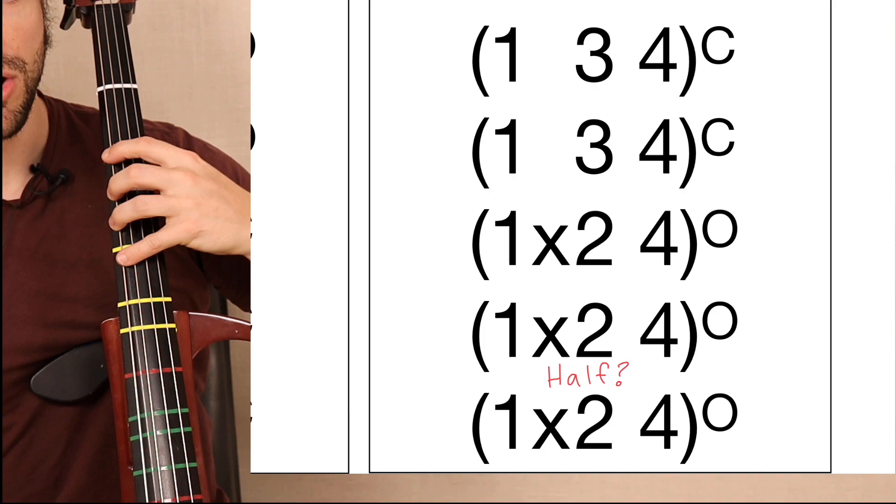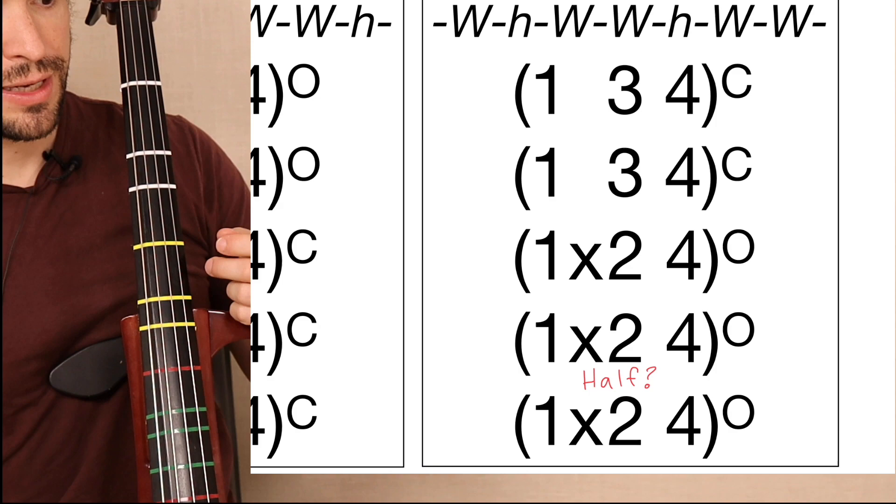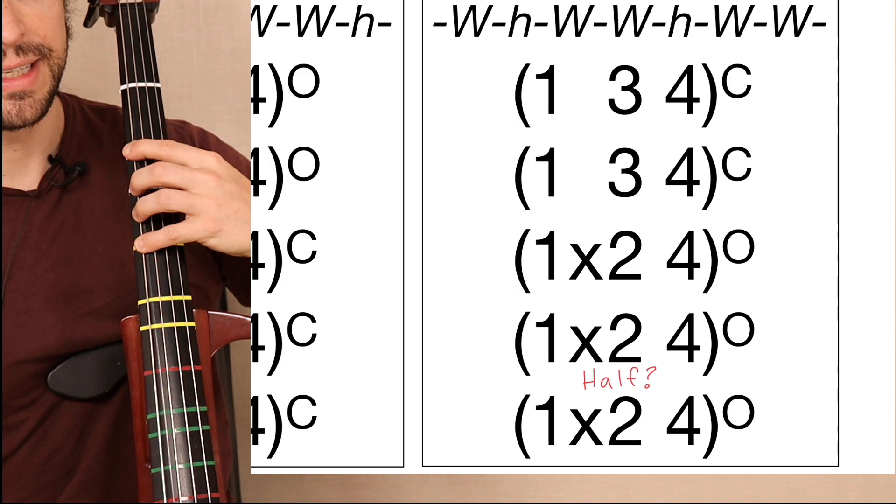So we start with a closed hand position. Put your index finger on the E. There's no extension. So all your fingers are spaced a half step apart. We need to play in these first three notes, a whole step and a half step. There it is.